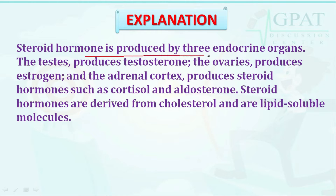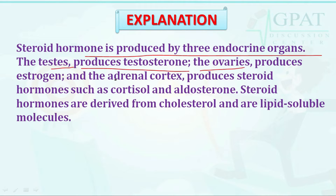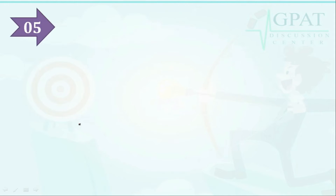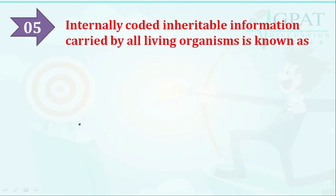Steroid hormones are produced by three endocrine organs: the testes produce testosterone, the ovaries produce estrogen, and the adrenal cortex produces steroids such as cortisol and aldosterone. Steroid hormones are derived from cholesterol and are lipid-soluble molecules. Estrogen is a steroid produced by the ovaries.